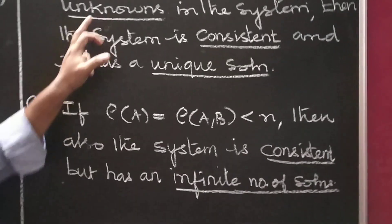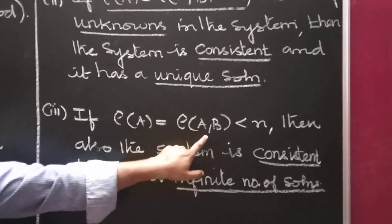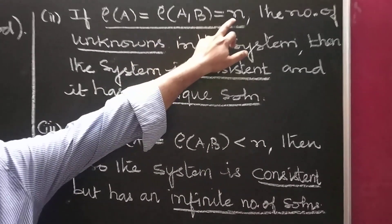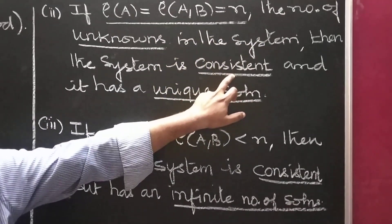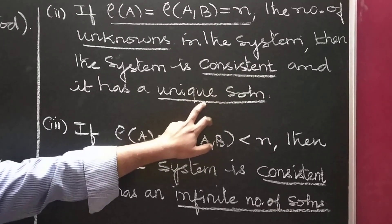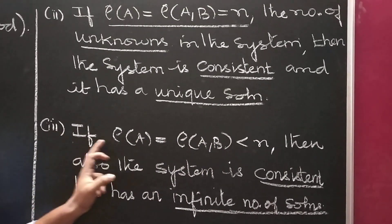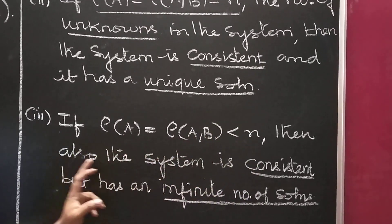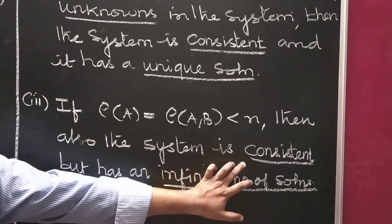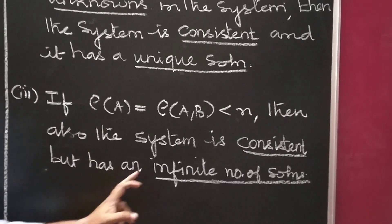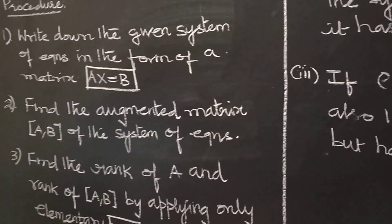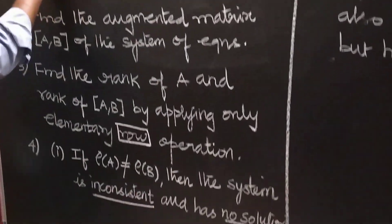Third point: if rank of A equals rank of [A, B], which is less than N, then the system is also consistent but it has an infinite number of solutions. These are all the procedures for solving the system of equations.